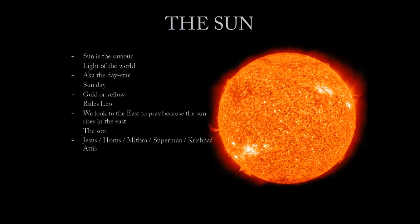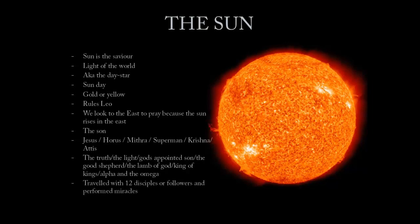The Sun, S-O-N, the Son of God in different incarnations and religions is known as Jesus, Horus, Mithra, Superman, Krishna, Atis, etc. These planets are where the greatest stories, movies, fairy tales, and religious stories come from. The Sun is also known as the truth, the light, God's appointed Son, the Good Shepherd, the Lamb of God, King of Kings, Alpha and Omega. Jesus travels with 12 disciples, and so does the Sun — it travels with the 12 solar constellations.